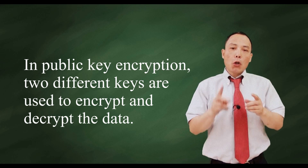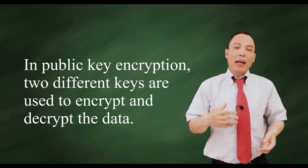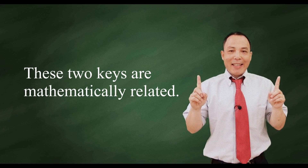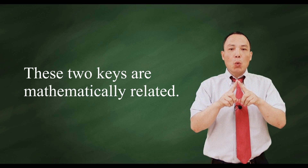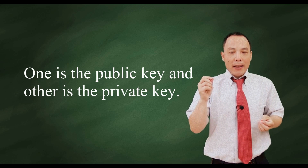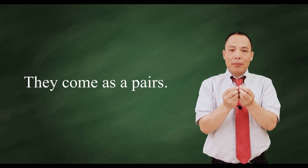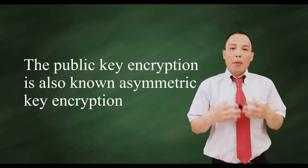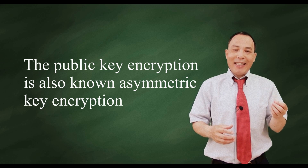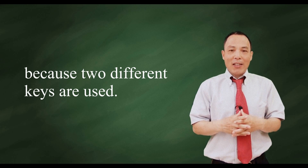In public key encryption, two different keys are used to encrypt and decrypt the data. These two different keys are mathematically related. One is a public key, the other is a private key. They come as a pair. Public key encryption is also known as asymmetric key encryption because these two different keys are used.